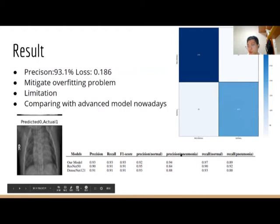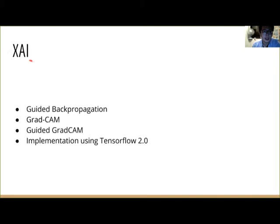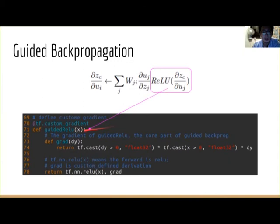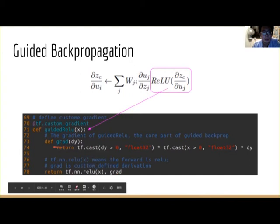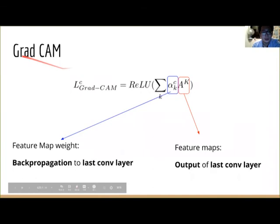Then my partner will introduce XAI to you. In my part, I will give some explanation of XAI implementation on TensorFlow version 2 with three methods. Firstly, guided backpropagation. To implement this, we need to apply our own custom gradient function. For the forward part, we use the normal ReLU function, but for the backpropagation part, we use our customized ReLU gradient.